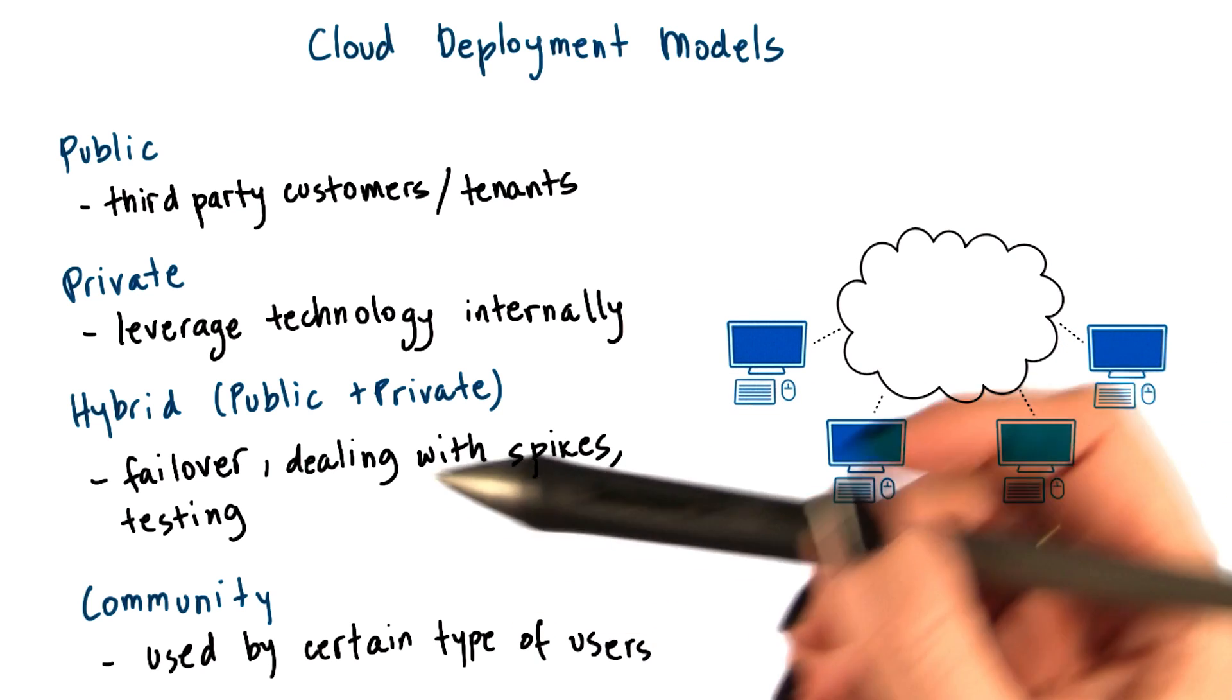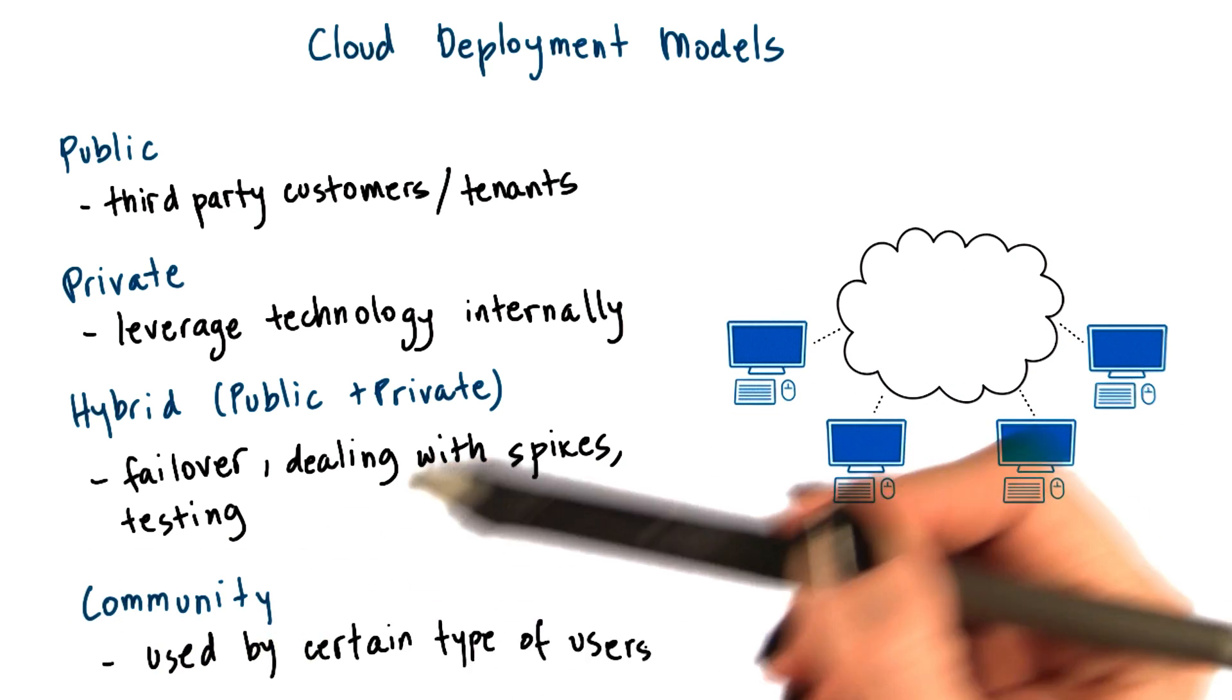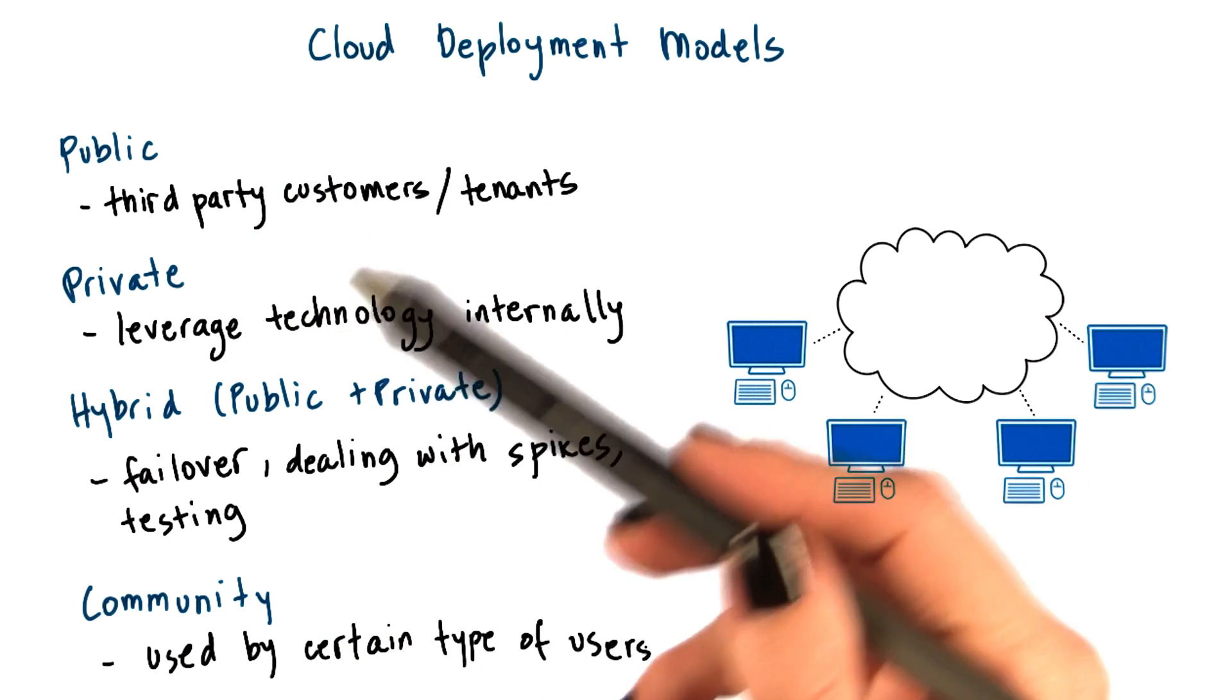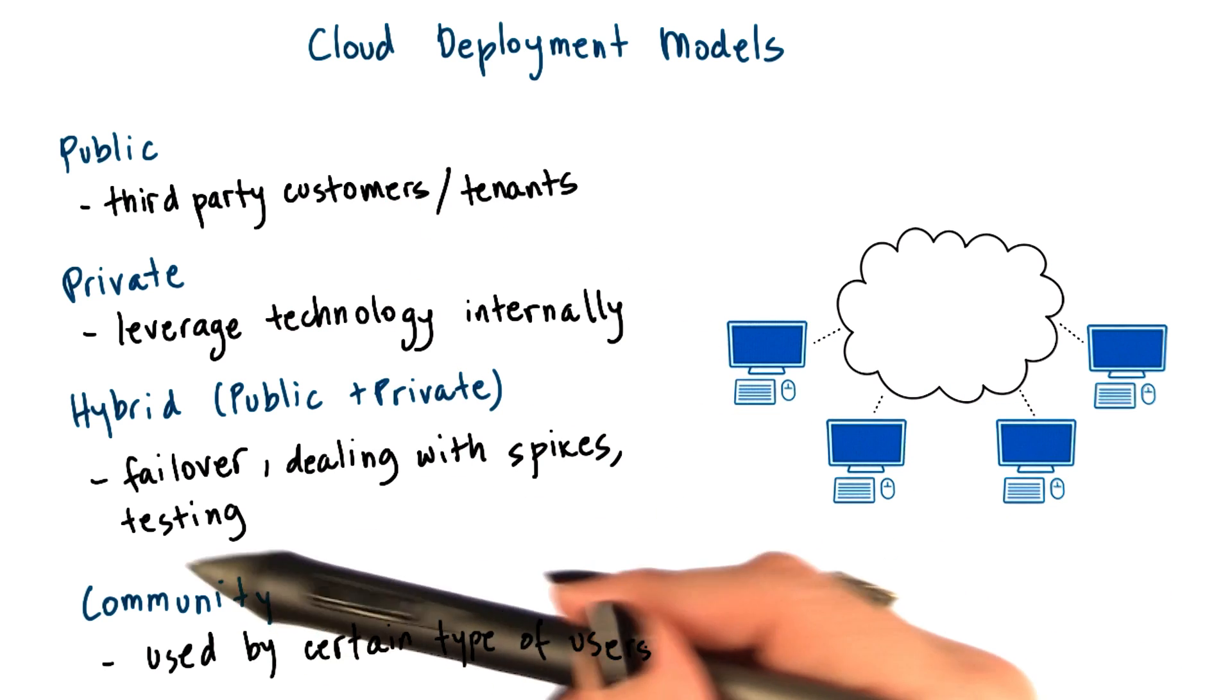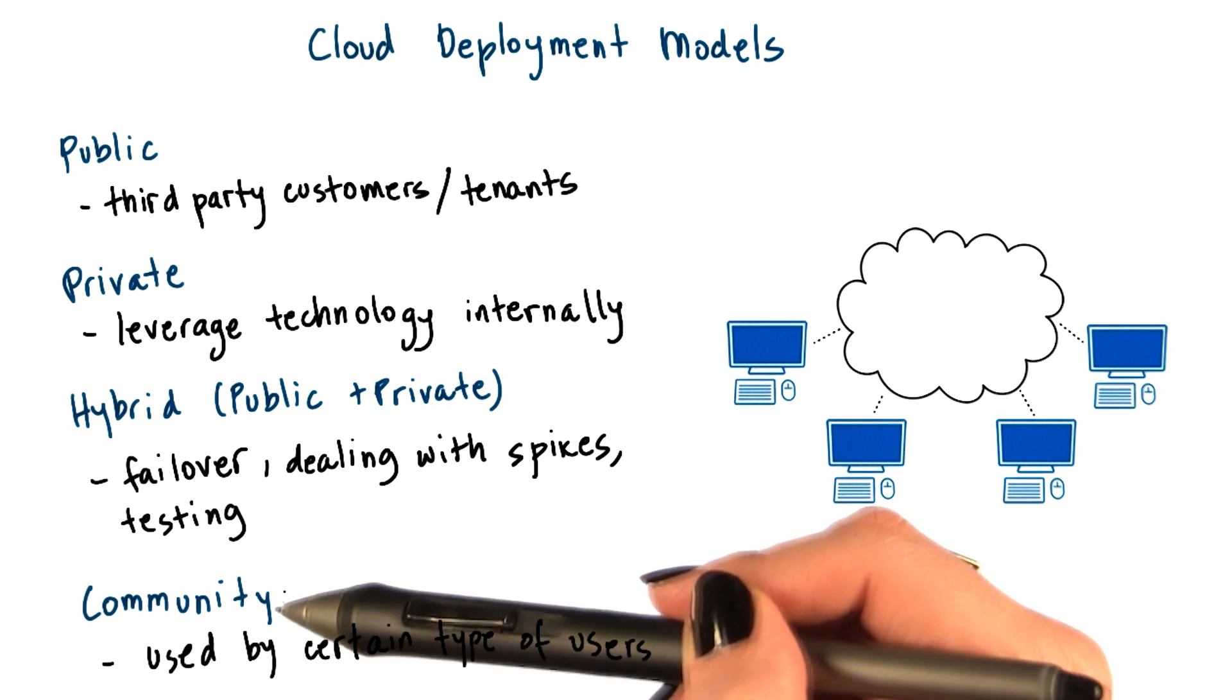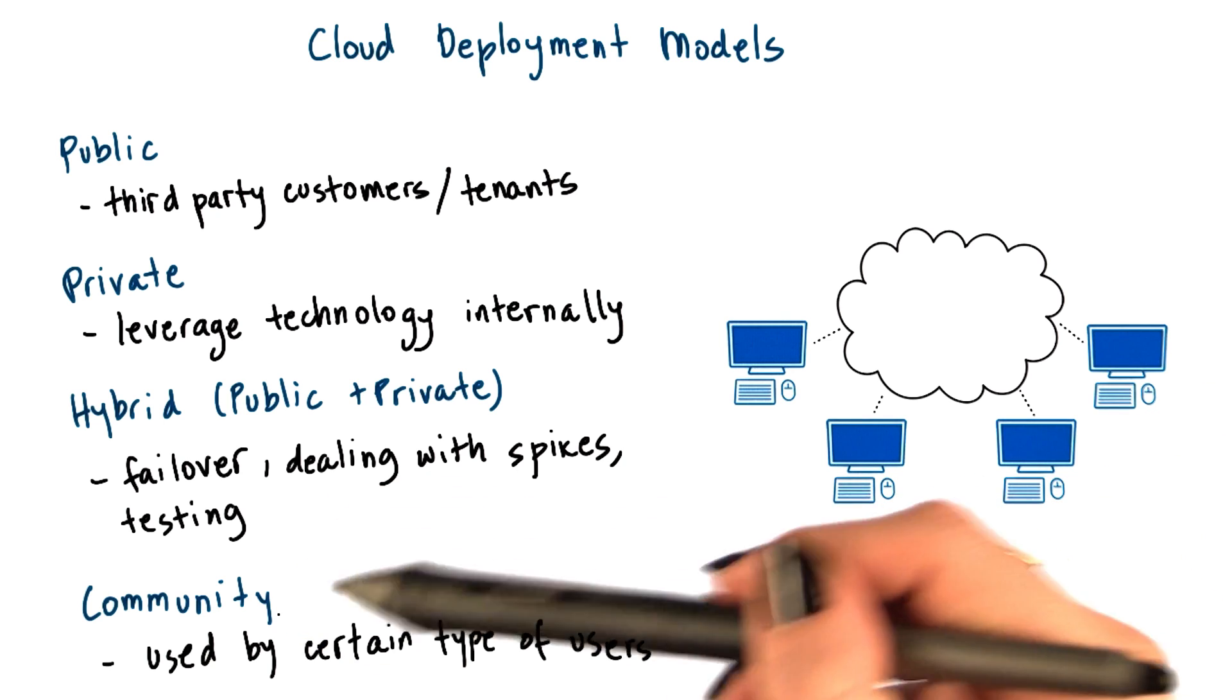Finally, the definition also references that there is a community cloud as a type of cloud. This is really just a public cloud where the third-party customers, the third-party users of the services or the information that's provided by this community cloud isn't really just used by arbitrary customers, but by a certain type of users.